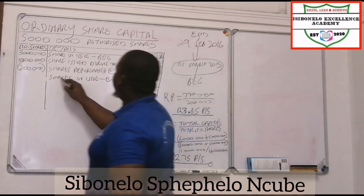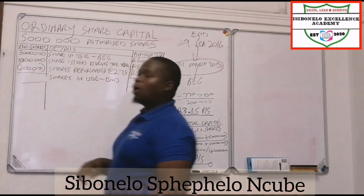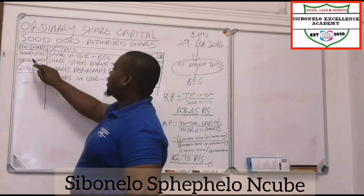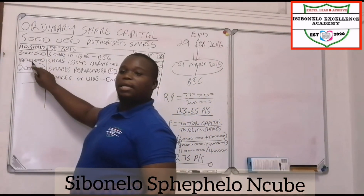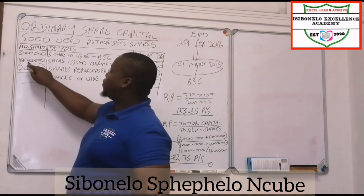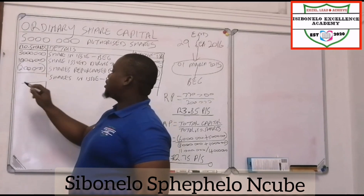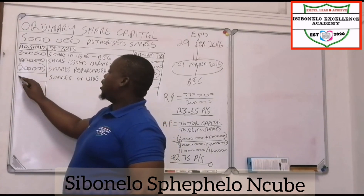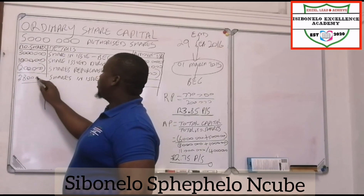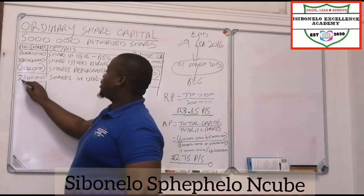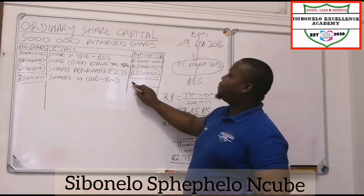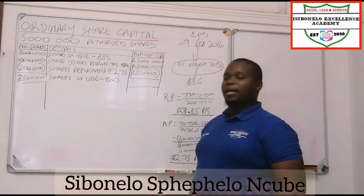To get the number of shares in issue at the end, we take the number of shares at the beginning, add the shares issued during the current year, then minus the options or share repurchases. So 2 million plus 1 million equals 3 million, minus 200,000 gives us 3,800,000 shares.